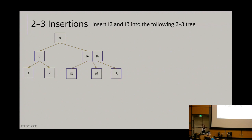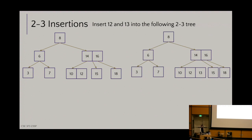Where is 12 going to go initially? It gets paired to the right of 10. Can it stay there? Yes — there's space, so boom, I've added 12 without adding height. Where does 13 go? To the right of 12. Now I've got 10, 12, 13 — an overloaded node. Which of the three percolates up? The middle value: 12.